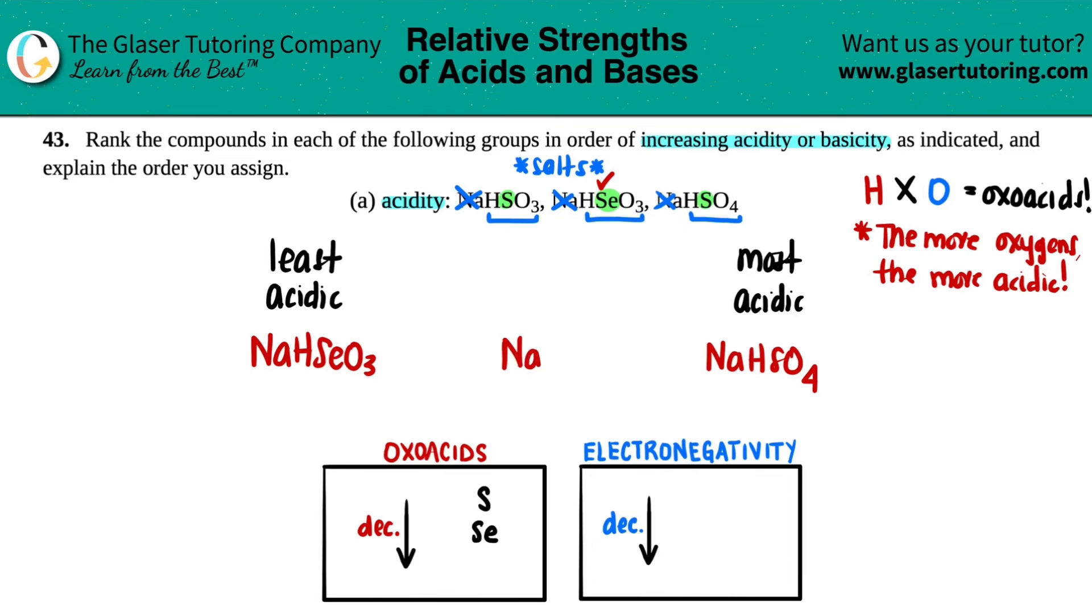And then we have NaHSO3 in the middle. We just got to put our less than signs because we're working from least to most. So NaHSeO3 is less acidic than NaHSO3, which is less acidic than NaHSO4. And that is the ranking system.